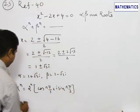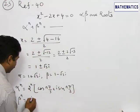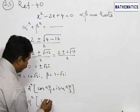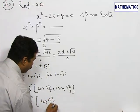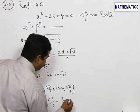Being it is a conjugate, β^n can be written as 2^n into cos(nπ/3) - i sin(nπ/3).